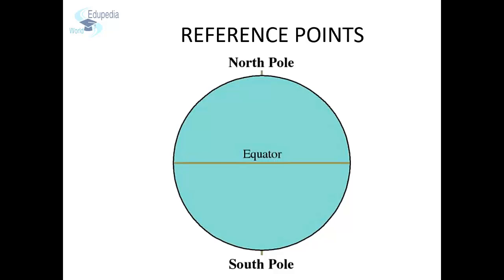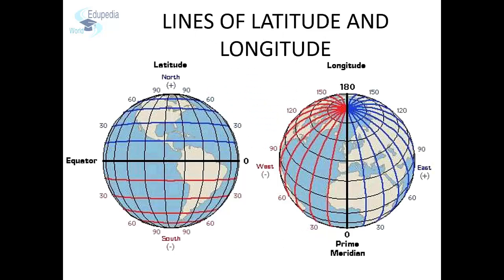One set of circles is drawn horizontally around the Earth. These circles are always parallel to each other. The other set of circles are drawn vertically through the poles. These vertical and horizontal lines form a grid system which is used to locate any place on the Earth.